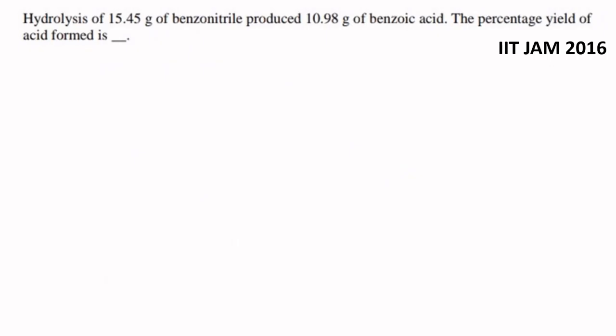Now moving to the next question: hydrolysis of 15.45 gram of benzonitrile produced 10.98 gram of benzoic acid. The percentage yield of the acid formed is to be calculated.